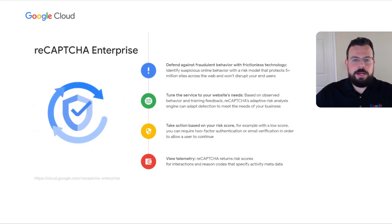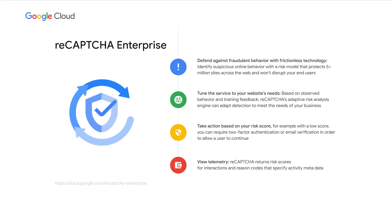reCAPTCHA Enterprise is our fraud and bot protection product. Based on technology that has helped defend websites for over a decade from bots, reCAPTCHA Enterprise allows you to leverage the insight and intelligence derived from protecting millions of sites on the web. It offers unique capabilities built specifically for the enterprise to protect from bots and fraud. Security teams benefit from enhanced detection such as extra granular scores, reason codes for high-risk scores, and the ability to tune the risk analysis engine to your site's specific needs.